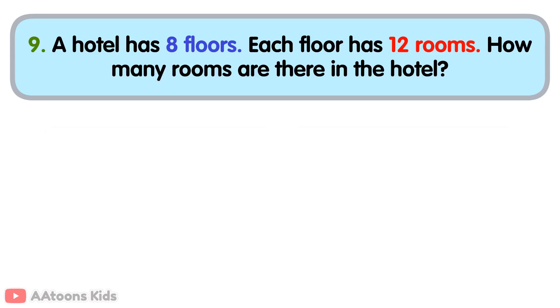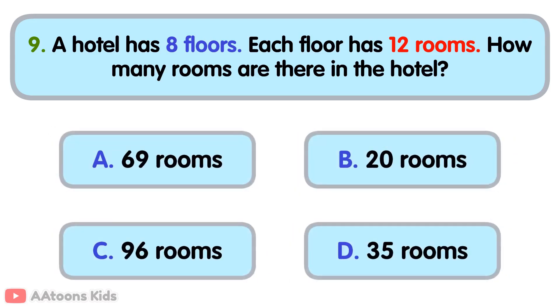A hotel has eight floors. Each floor has twelve rooms. How many rooms are there in the hotel?